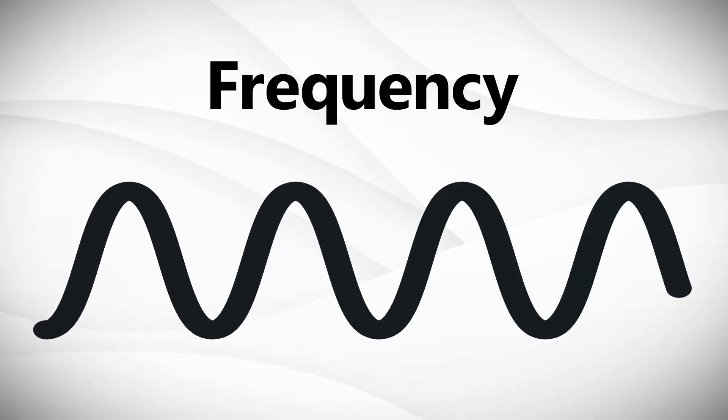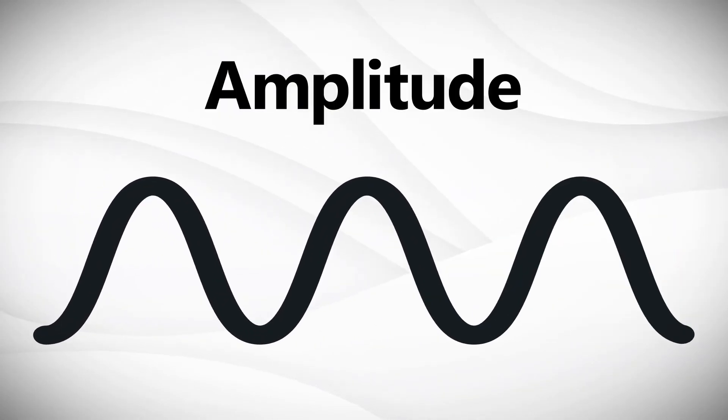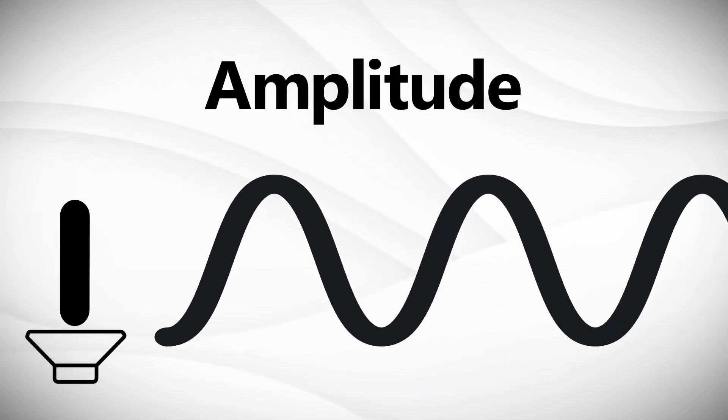Now, these waves have a frequency, which determines the number of waves per second, and an amplitude, which determines the height of the wave, or in sound's case, the volume.